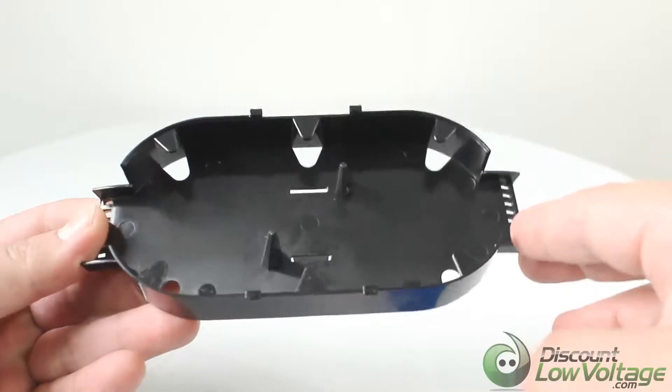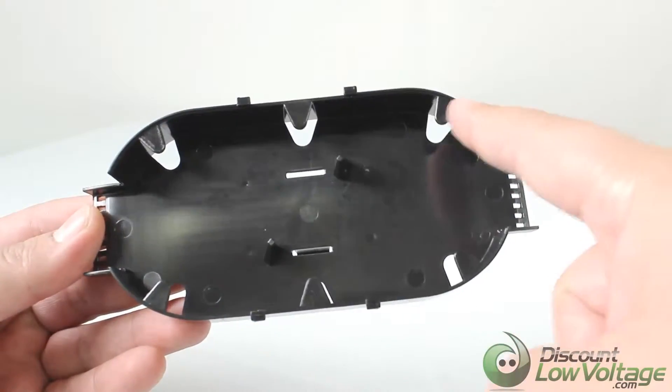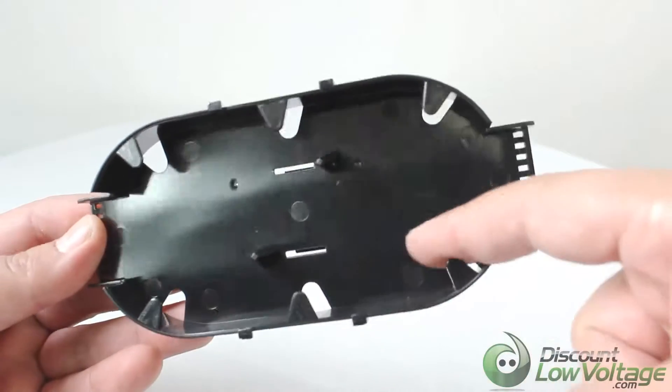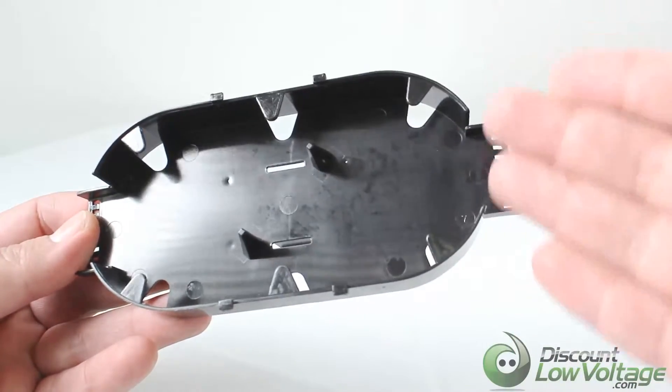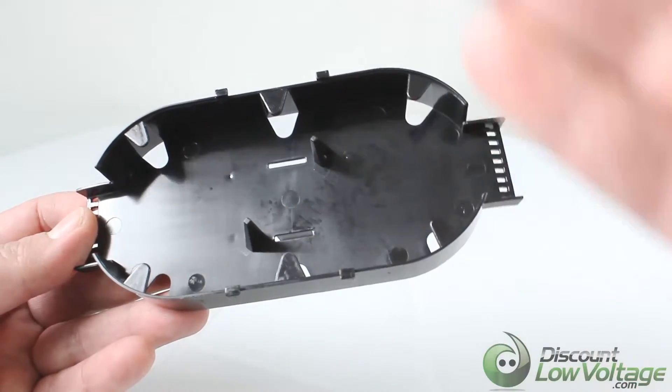And then on the inside here you'll notice that it does have a preformed radius. It's got these little tabs to help keep the cable in place, but this does help to maintain the bend requirements of your cable.